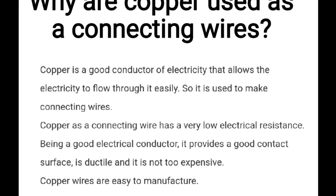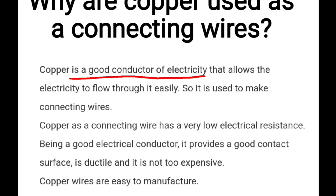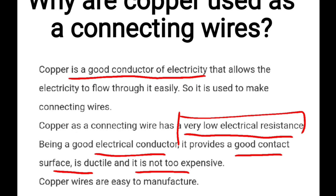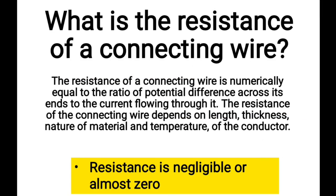Question 3: Why are copper wires used as connecting wires? Copper is a metal, and metals are good conductors of heat and electricity — they allow maximum electric current to flow. Copper has low electrical resistance, provides good contact surface, is ductile, is not too expensive, and is easily manufactured. The main reason is its low electrical resistance.